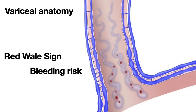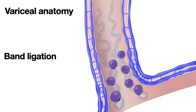These large esophageal varices with red wale signs can rupture and cause vomiting of blood — hematemesis — or the blood can go down the GI tract and the patient can present with melena (dark black stool), or with bright red blood per rectum — hematochezia — if there is significant bleeding causing shock. These setbacks can be prevented by band ligation of esophageal varices, which also treats active bleeding and prevents re-bleeding.